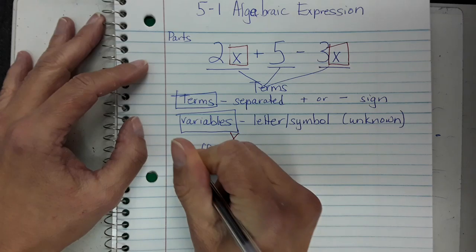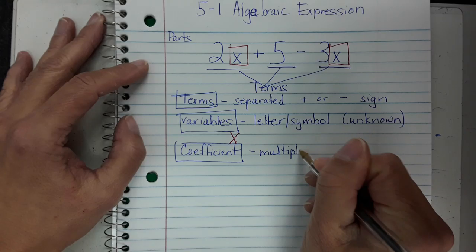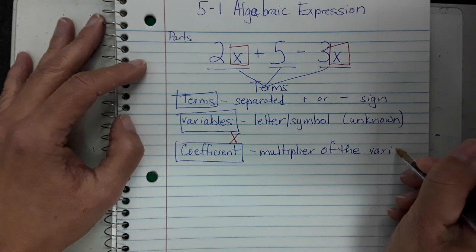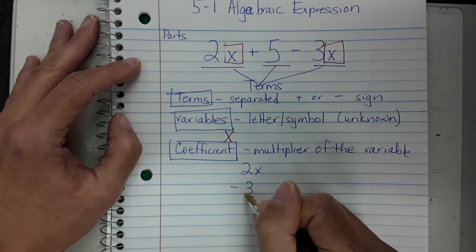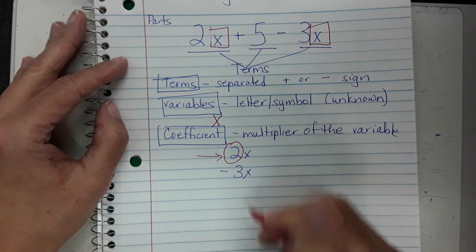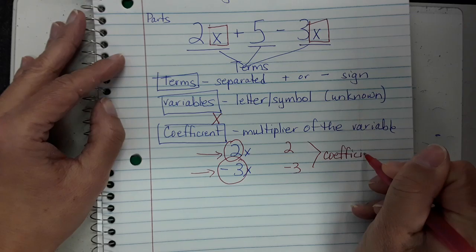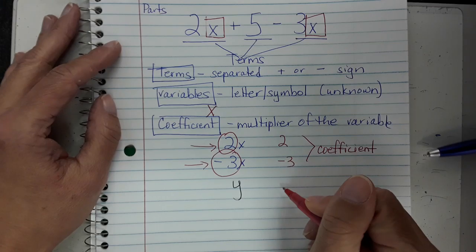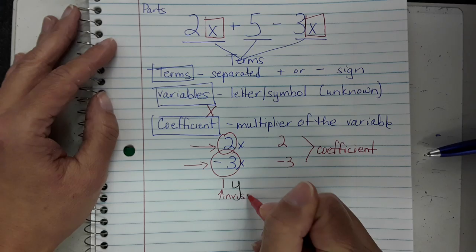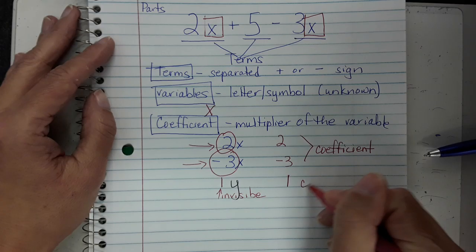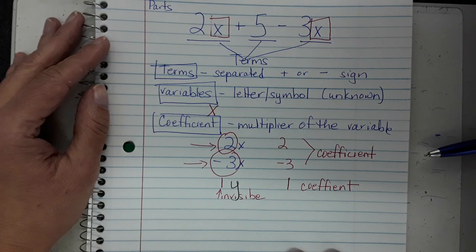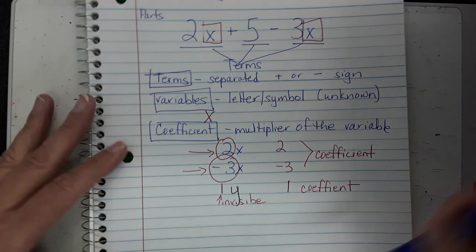The number that is in front of our variable is also very important — it's called the coefficient. Think of it as the multiplier of the variable: how many of them do you have? So in our example, where we have 2x and negative 3x, the coefficients are 2 and negative 3. If you had just a variable by itself, like y, the coefficient is an invisible 1 — we don't write 1y, the 1 is invisible.